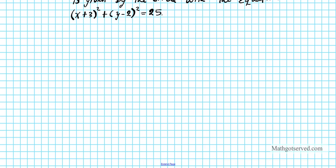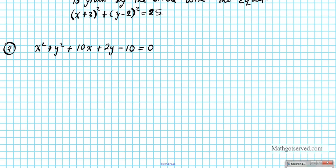Let's look at question number 2. We have x² + y² + 10x + 2y - 10 = 0. Notice there are no parentheses here — this formulation is known as the general form, where all the quantities are completely expanded.